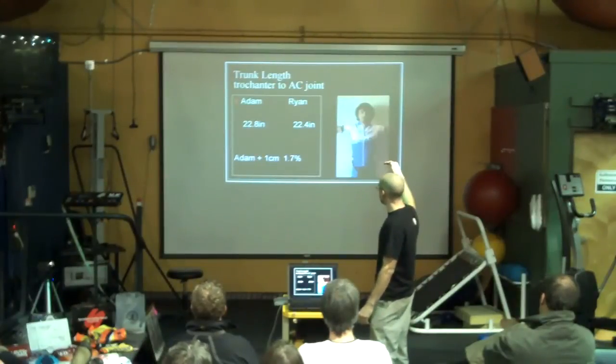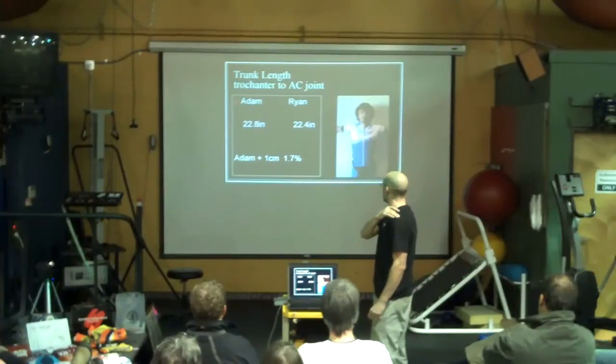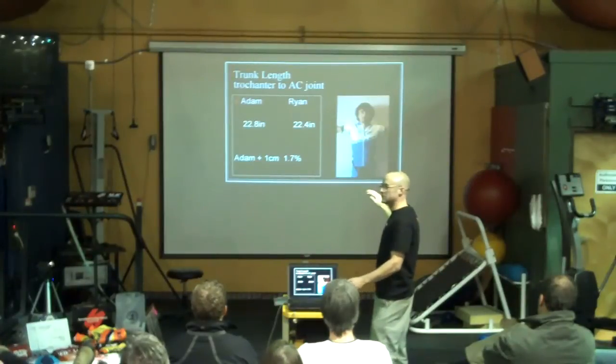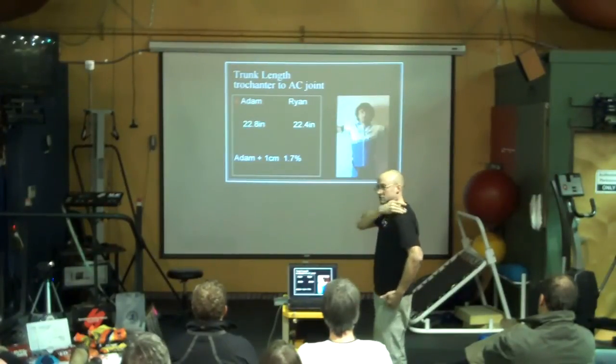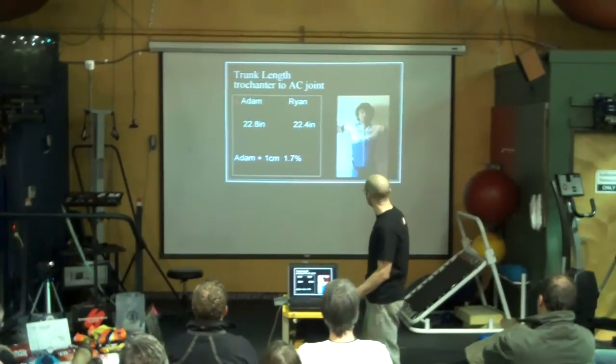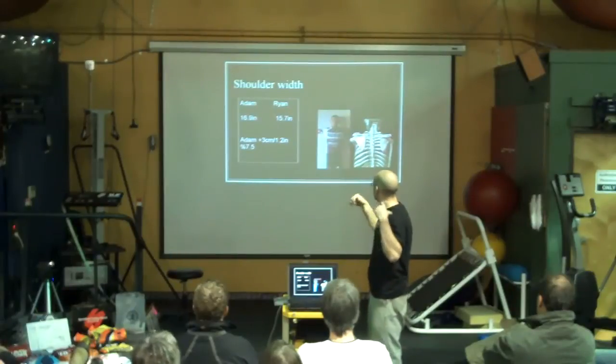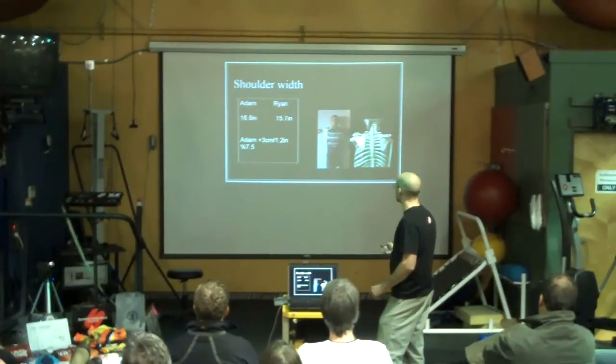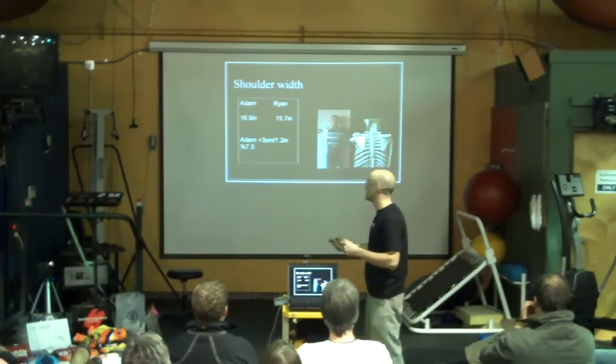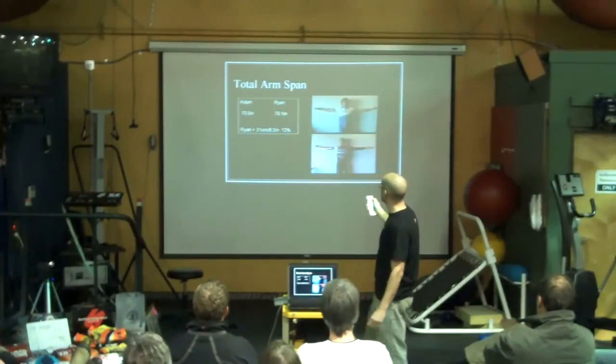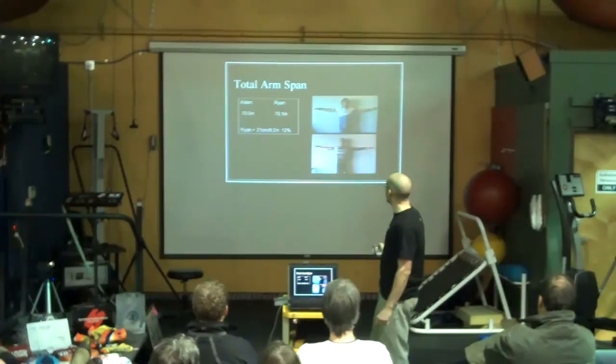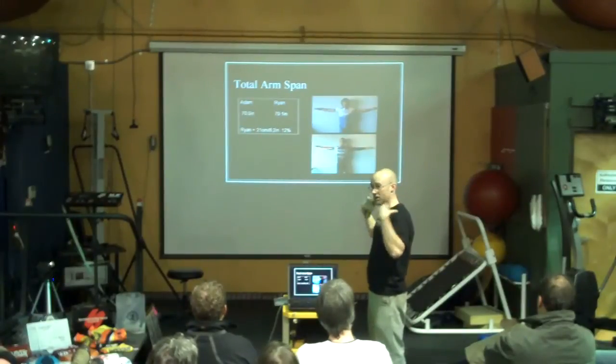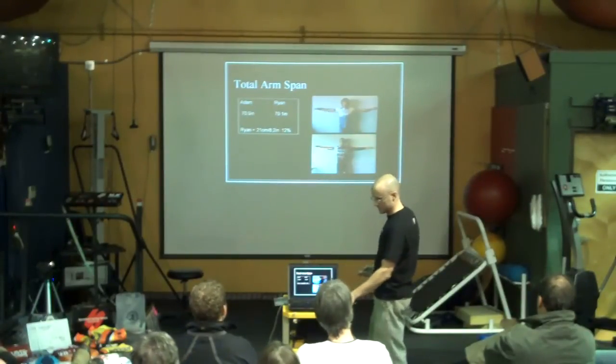We measured both these guys just the trunk length from the AC joint on the shoulder, not Adam Craig, down to their trochanter, kind of an arbitrary measurement, but it's interesting. Seven inch difference of height, but Adam actually has a little bit of height difference, or length, in his torso that Ryan doesn't have, pretty surprising. Shoulder width taken from the AC joints side to side on both these guys. Adam actually has a broader chest than Ryan, which is pretty striking. When you look at total arm span of these guys, Ryan has eight and a half inches longer wingspan on the guy, but his chest is actually narrower than Adam's, so he's got monkey arms.